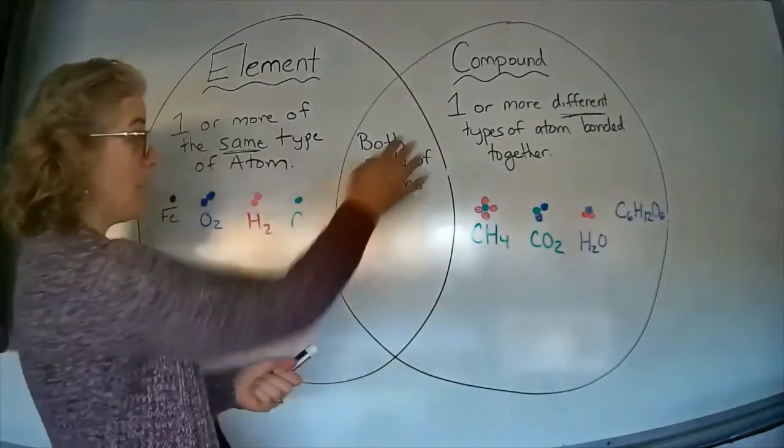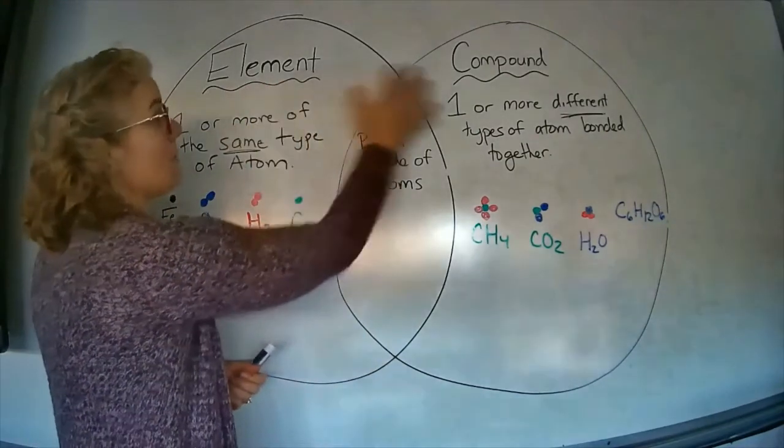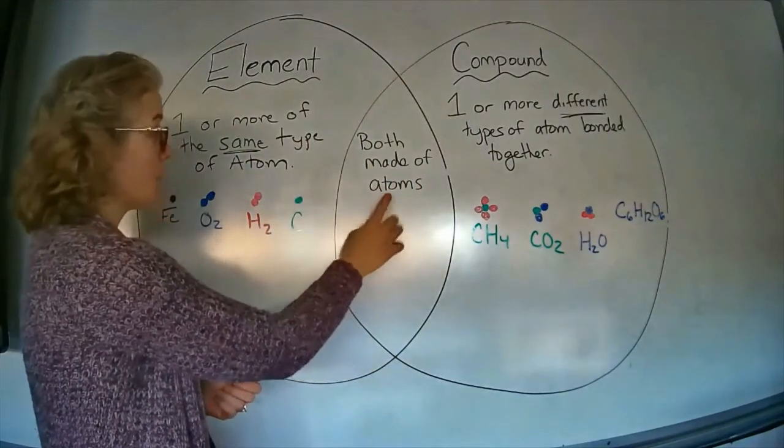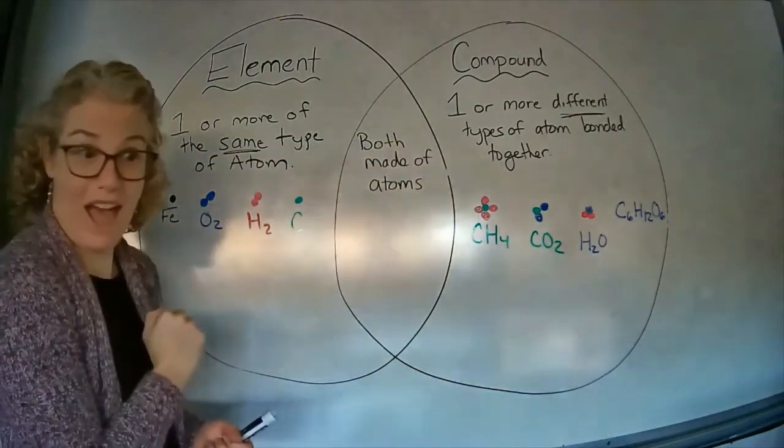Something they both have in common to put in the middle of our Venn diagram is that both elements and compounds are made up of atoms. It's just whether it's the same type of atom or different atoms.